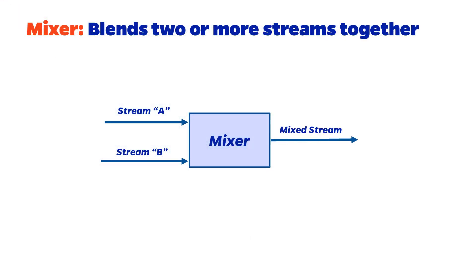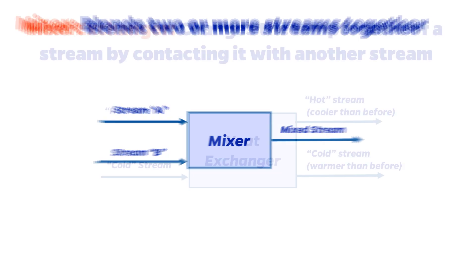A mixer is kind of the opposite of a separator, and is used when you want to blend two or more streams into a single stream. This unit is often used directly upstream, or before, chemical reactors to make sure that reactant molecules are well mixed prior to entering the reactor.